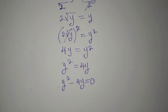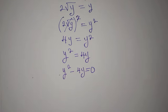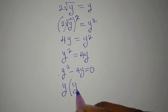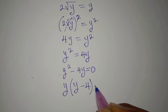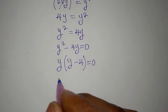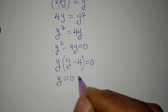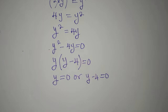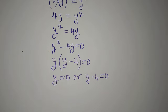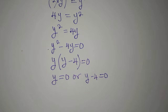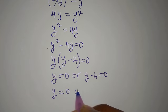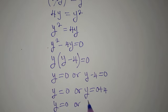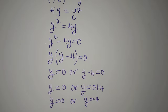Then y squared minus 4y equals zero — I've brought everything to the same side. We can factor: y times (y minus 4) equals zero. Applying the zero product rule, y equals 0 or y minus 4 equals 0, giving y equals 0 or y equals 4.